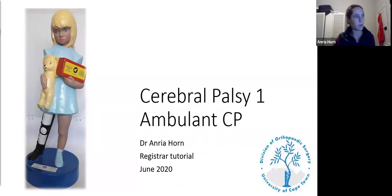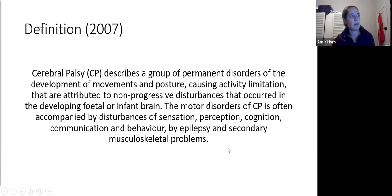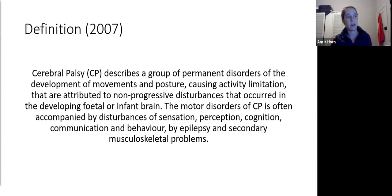We'll start with the definition, which often comes up and is asked. This is the official international definition of cerebral palsy, agreed by consensus in 2007. Cerebral palsy describes a group of permanent disorders of the development of movement and posture causing activity limitation, attributed to non-progressive disturbances that occurred in the developing fetal or infant brain. The motor disorders of CP are often accompanied by disturbances of sensation, perception, cognition, communication, behavior, as well as epilepsy and secondary musculoskeletal problems.